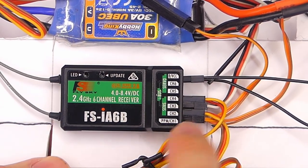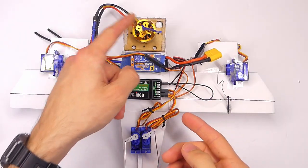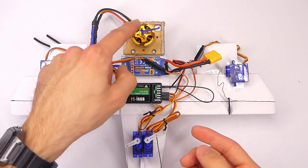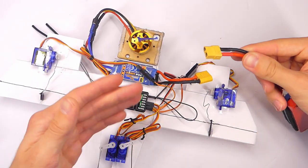It can be in any port, as long as we get power to the receiver - that's what we care about. Make sure your motor is disconnected or take your propeller off, just in case something crazy happens, because we're about to plug in the battery.